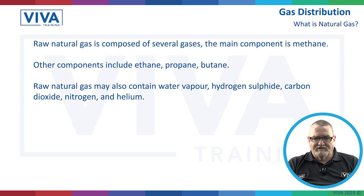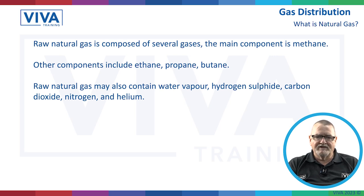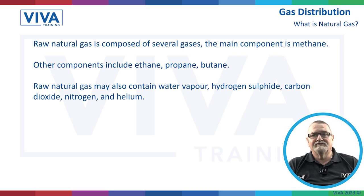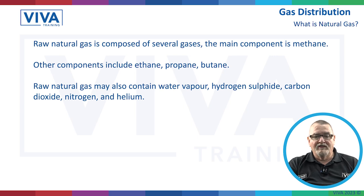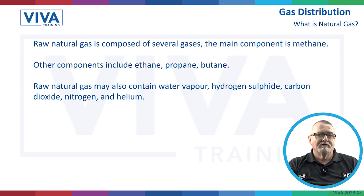Also in the raw natural gas, you've got water vapour. Because it's down under the ocean, it's moist. You've also got hydrogen sulphide, carbon dioxide, nitrogen — which is the most abundant gas around us, with 80% of the atmosphere made up of nitrogen — and then you've got helium, the stuff you put into balloons. It's lighter than air and it rises up.